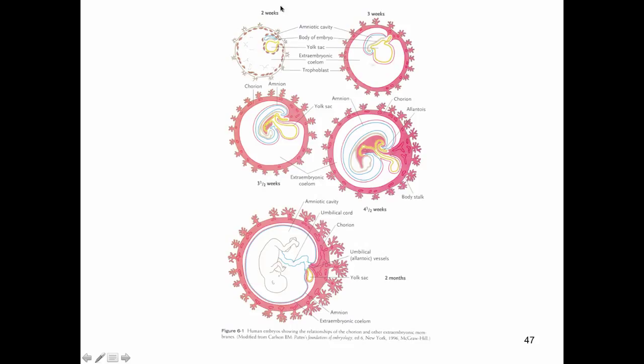Here we have this tiny little two-week pregnancy that's barely anything, and you can see these trophoblastic cells that have started to differentiate. At three weeks you start to see the trophoblastic cells taking on a shape that is already starting to look like the ultimate shape of the fetal side of the placenta.